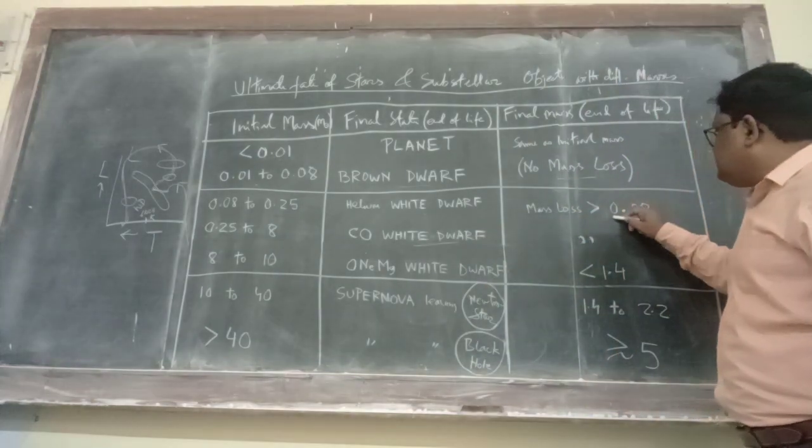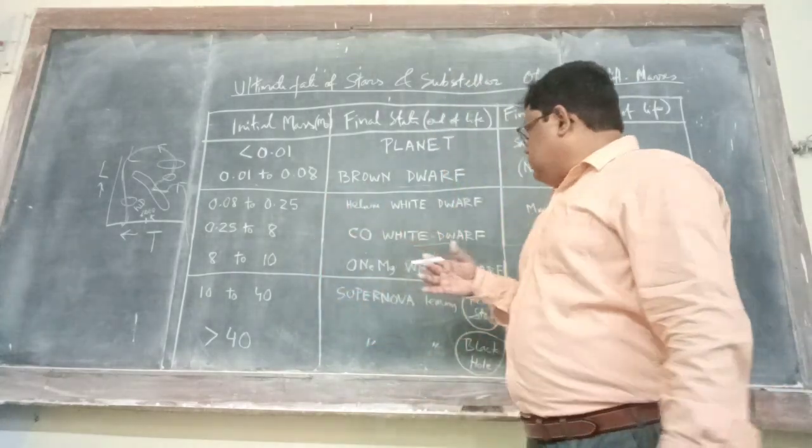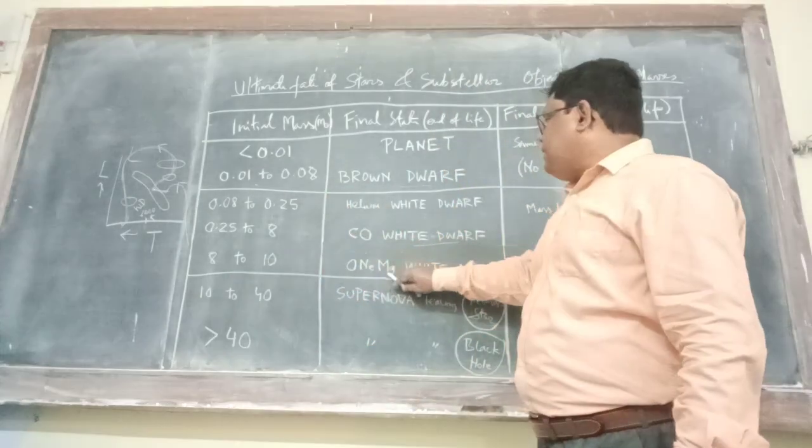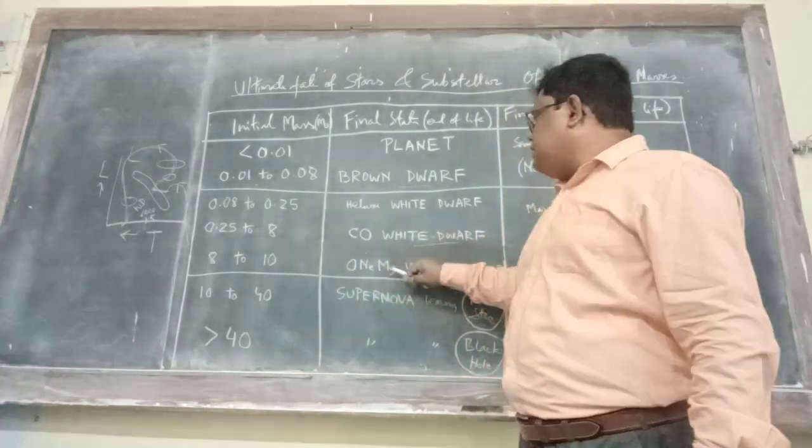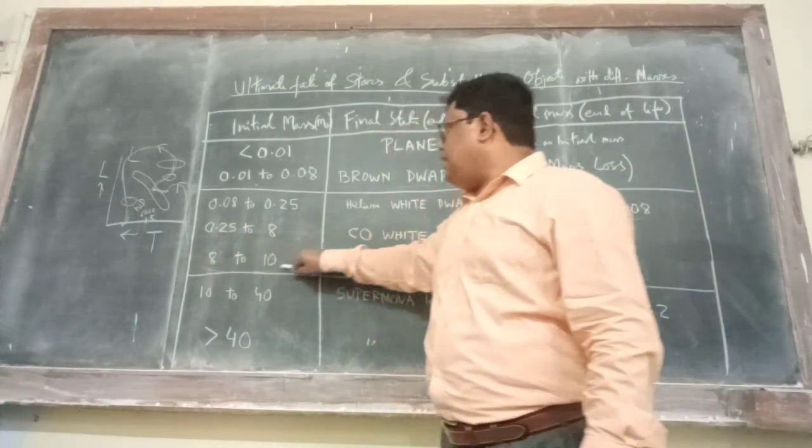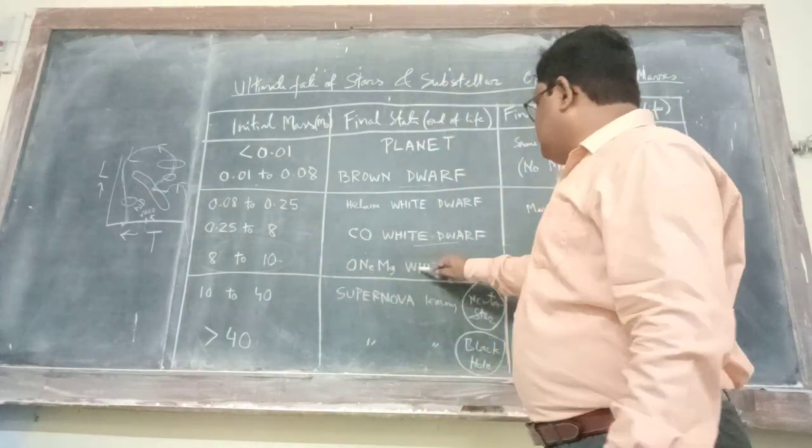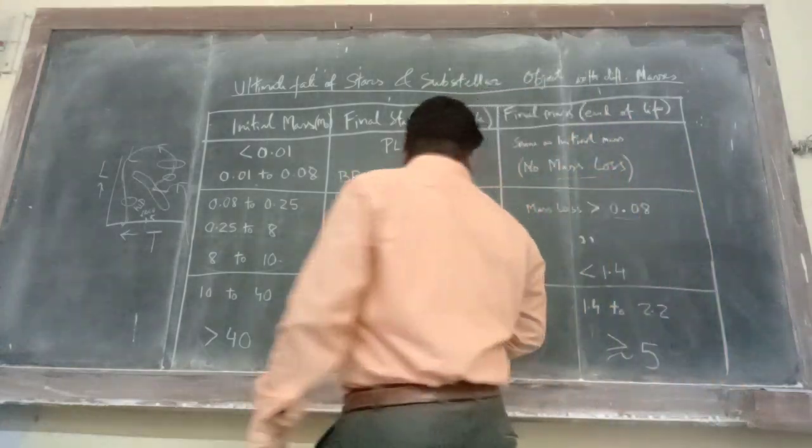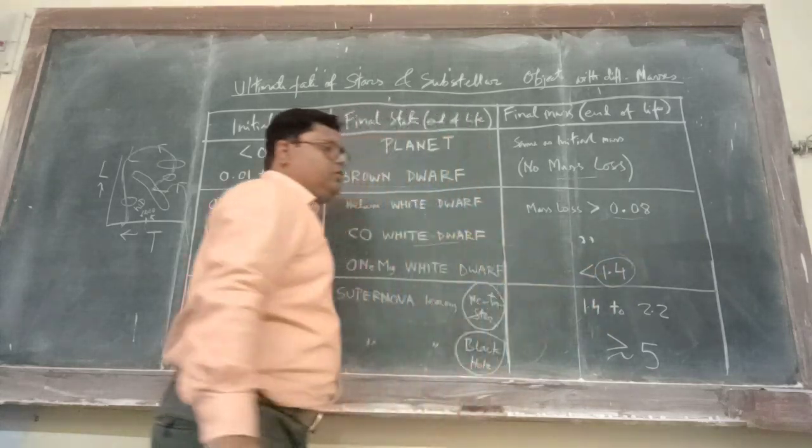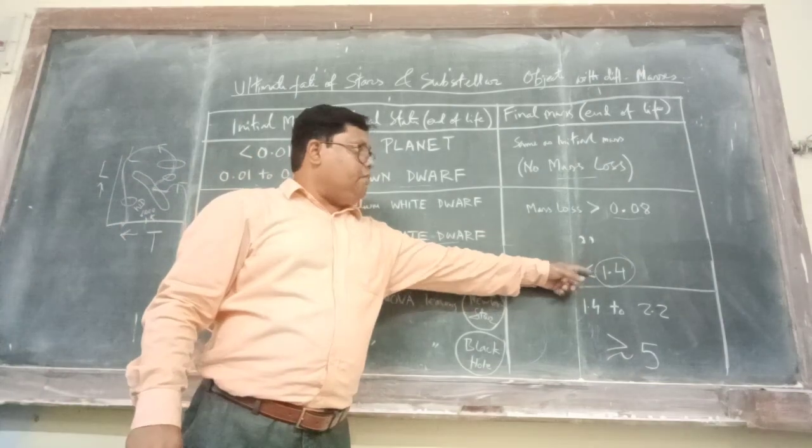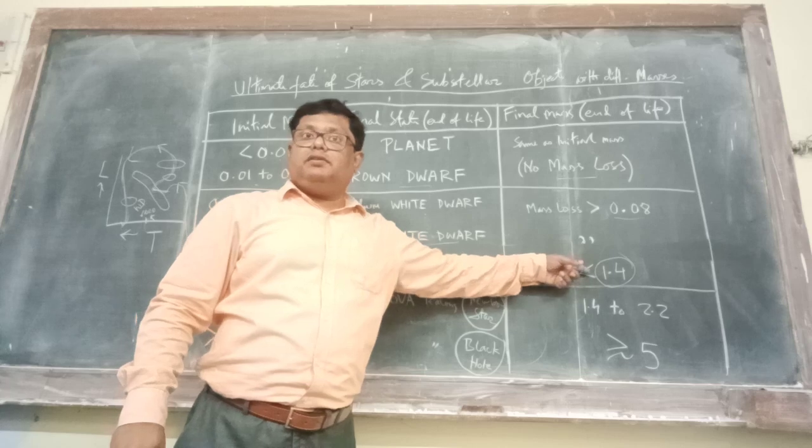Again the mass loss is greater than 0.08. Now again the later stage is oxygen neon magnesium white dwarf. That means white dwarfs which are made up of mainly oxygen, neon, and magnesium. Now they have got little bit higher masses. They have got the highest masses. So this was the white dwarf. And here you see the mass loss is much more, but still less than 1.4 solar masses. So for the first time the mass loss is more than 1 solar mass.